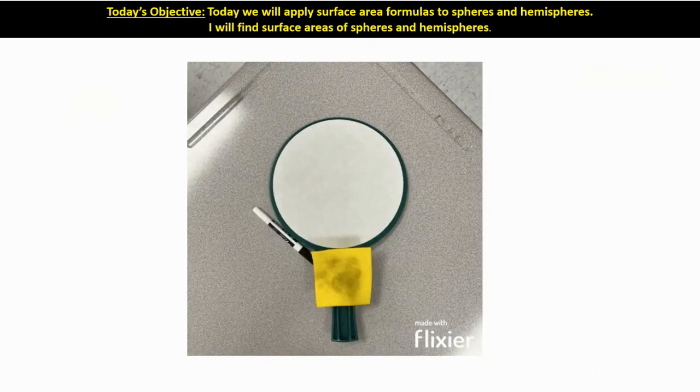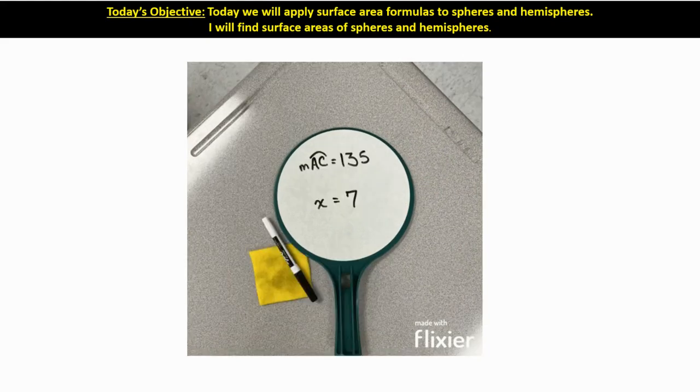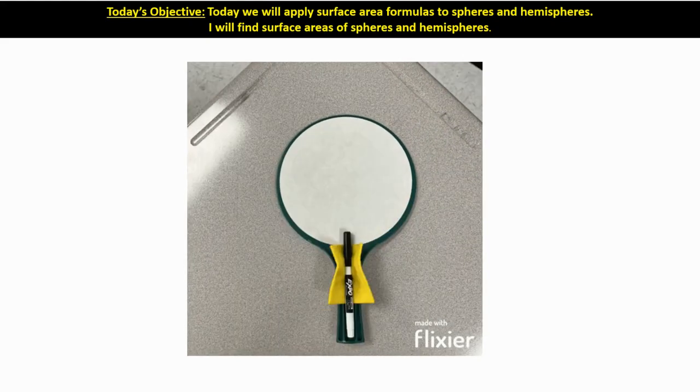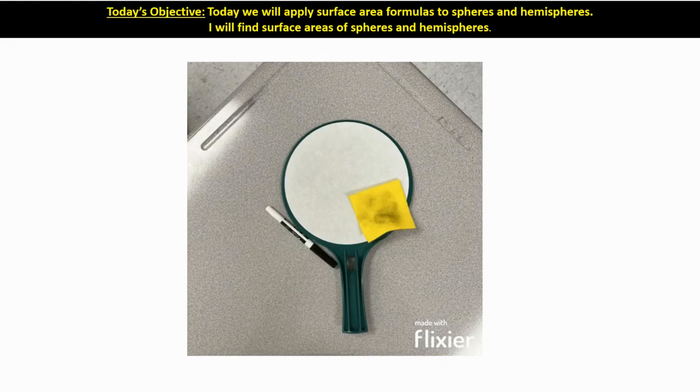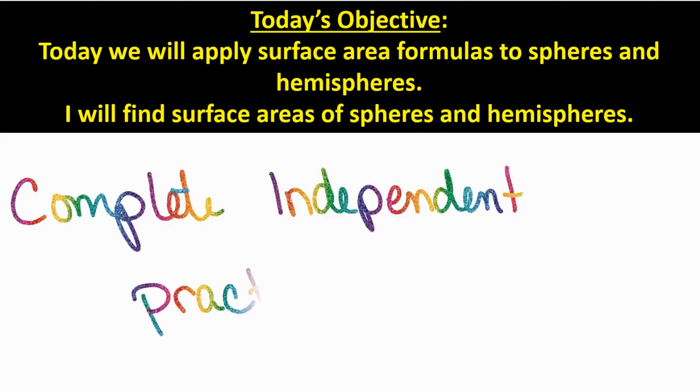If you were in class and you were working with the whiteboard and you have written on it to do any scratch work or to share your answer, please make sure you clean it off and put the eraser and the marker back in its holder. Our objective, let's review it, was to apply surface area formulas to spheres and hemispheres. And you should now be able to find surface areas of those spheres and the hemispheres, whether it's lateral or total on your hemispheres. You'll show me you can do this by completing the independent practice for today, which will be due tomorrow, which will be Wednesday. Thank you so much for watching.